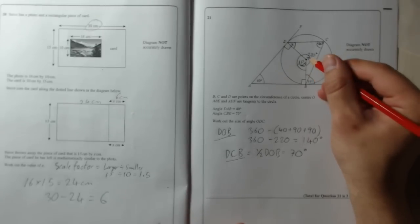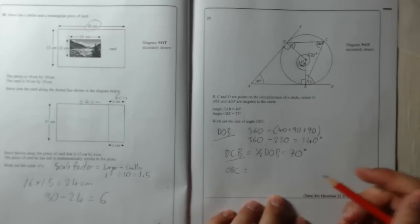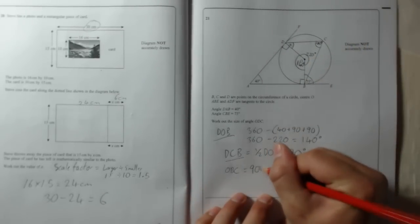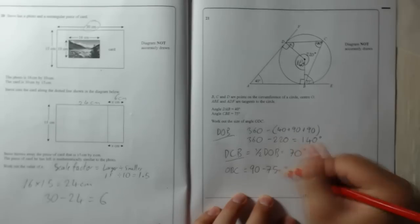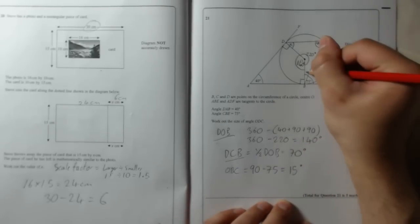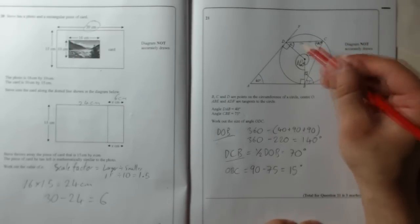This angle here, well all of that is your 90 degree angle. So this angle here, OBC, that is equal to, where am I again? OBC, so it's 90 degrees take away 75 degrees, which is 15 degrees. So that's 15.